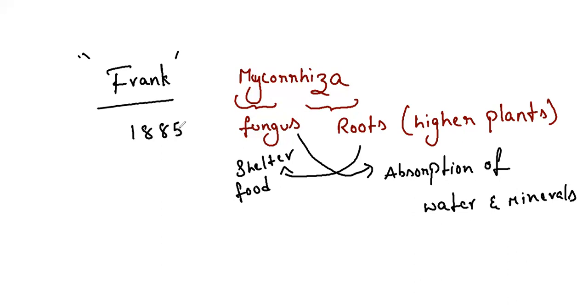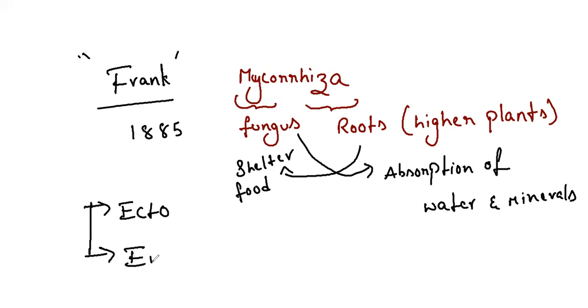Mycorrhizae is of two types: ectomycorrhizae and endomycorrhizae. Ecto means outside and endo means inside, which helps us understand these types easily.